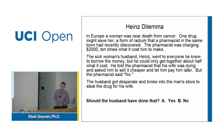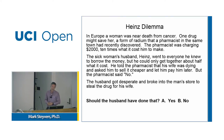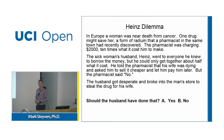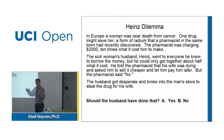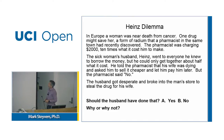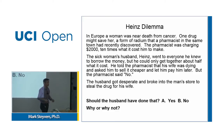Here's the famous Kohlberg dilemma. In Europe, a woman was near death from cancer. One drug might save her — a form of radium that a pharmacist in the same town had recently discovered. The pharmacist was charging two thousand dollars, ten times what it cost him to make. The sick woman's husband, Heinz, went to everyone he knew to borrow the money, but could only get together about half. He told the pharmacist his wife was dying and asked him to sell cheaper and let him pay later, but the pharmacist said no. The husband got desperate and broke into the man's store to steal the drug for his wife. The question is: should the husband have done that? Yes or no? And — why?